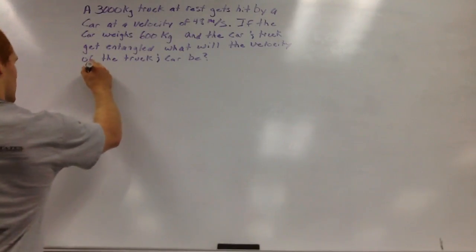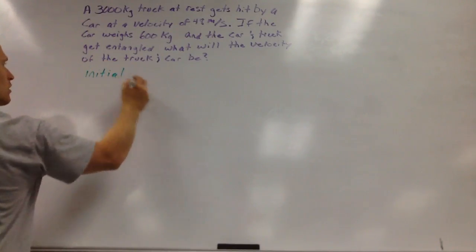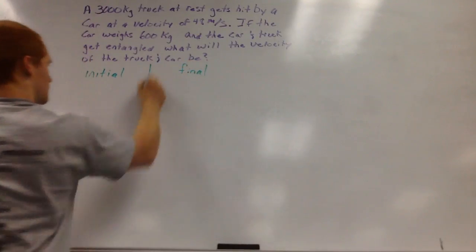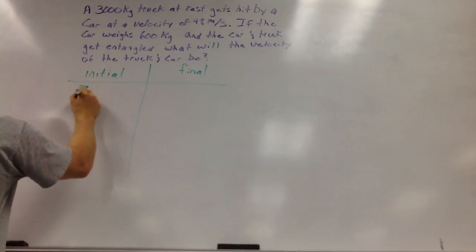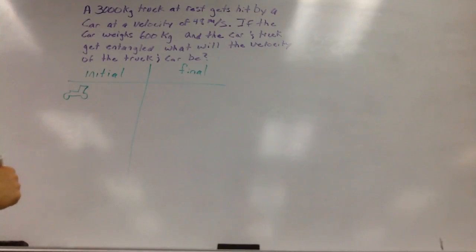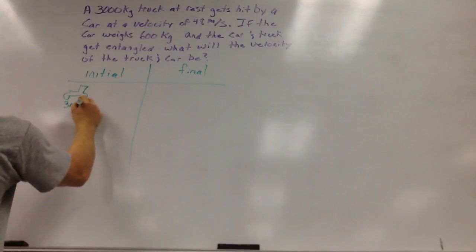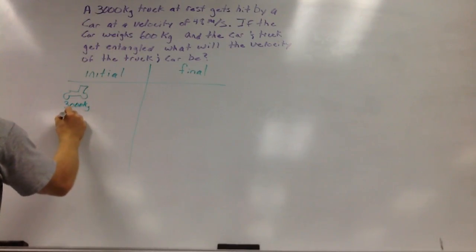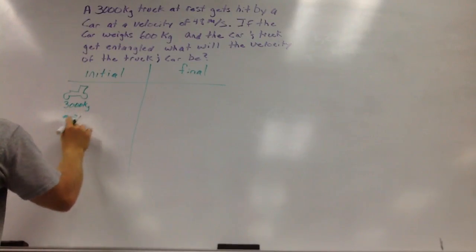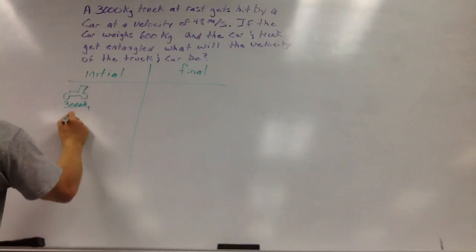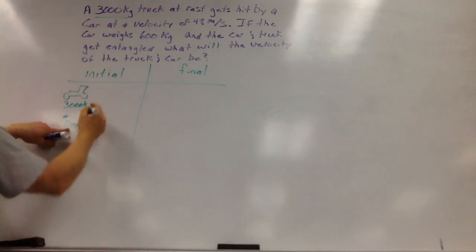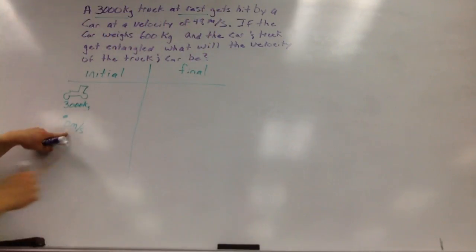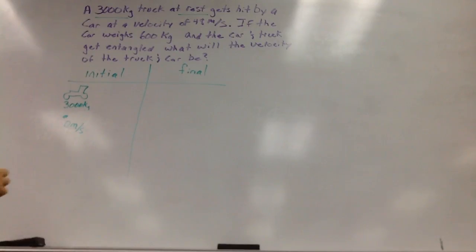The first thing we're going to do is make our chart for initial and final. So it says a 3,000 kg truck — I'm going to do the truck in green. Here's my truck. It weighs 3,000 kilos and it is at rest, so the velocity is just a dot and it is 0 meters per second. 3,000 kg truck at rest.